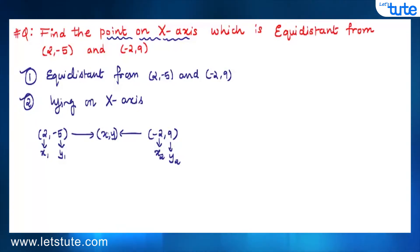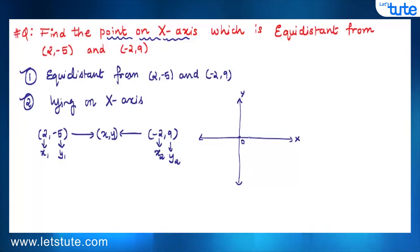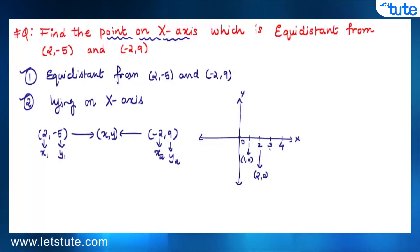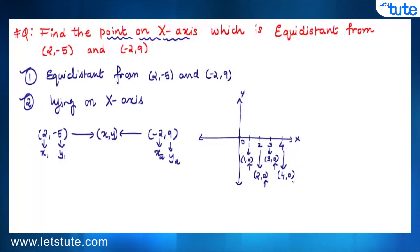The second condition says the point is lying on the x-axis. Let's understand that from the coordinate axis. Points on the x-axis are written as (1, 0), (2, 0), (3, 0), (4, 0) — the y-coordinate is always zero. So whenever a point is on the x-axis, its y-coordinate will be zero.